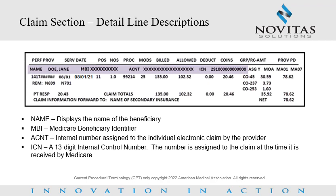ICN displays the internal control number. The 13-digit ICN is a unique number assigned to the claim at the time it is received by Medicare. It is used to track and monitor the claim.